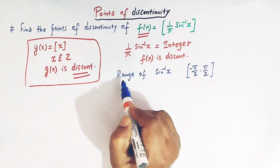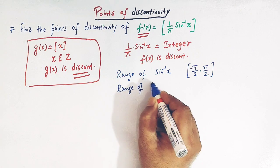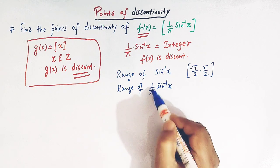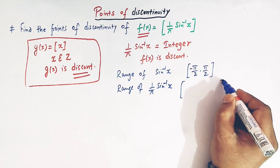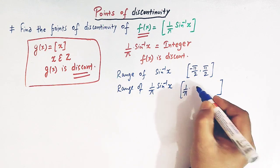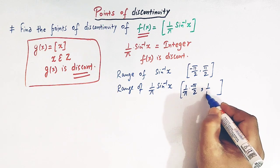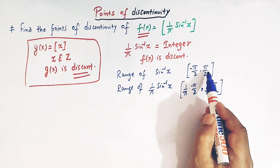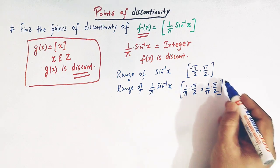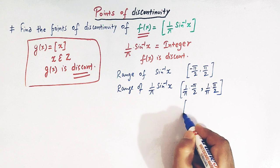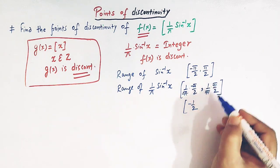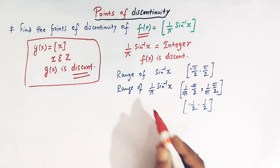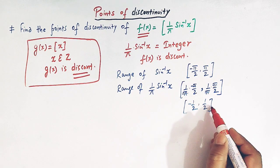Now let us find the range of (1/π)·sin⁻¹x. If we multiply sin⁻¹x by 1/π, the interval becomes [(1/π)·(-π/2), (1/π)·(π/2)]. Multiplying through, π cancels, and the interval reduces to [-1/2, 1/2]. So the range of (1/π)·sin⁻¹x is [-1/2, 1/2].